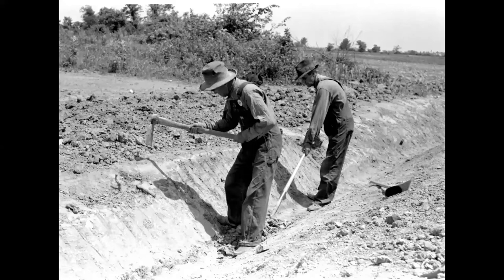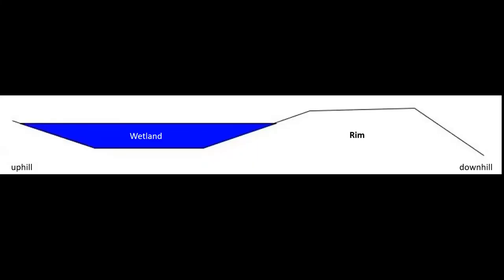The most obvious sign that any wetland has been drained is the presence of a ditch. This simple drawing shows a profile view of a typical wetland. Water is standing in a shallow basin, and the lower edge of that basin is bordered by higher ground — a natural dam or rim. The slopes in the drawing are much steeper than in a real wetland, exaggerated so you can see how the dam functions to maintain water.